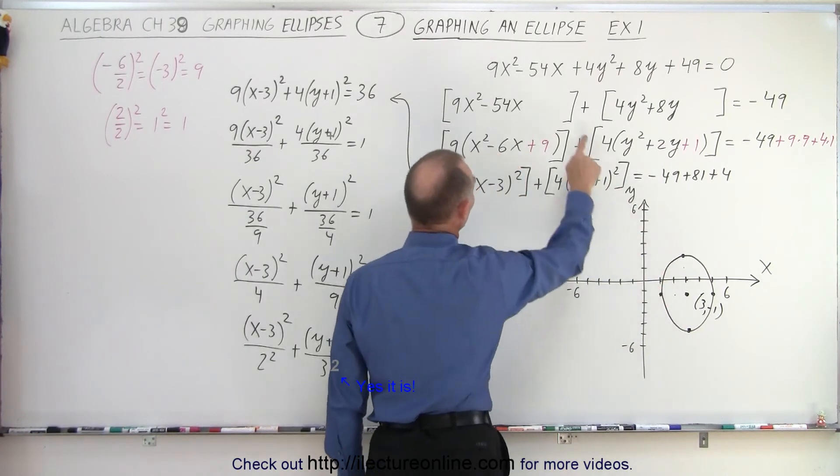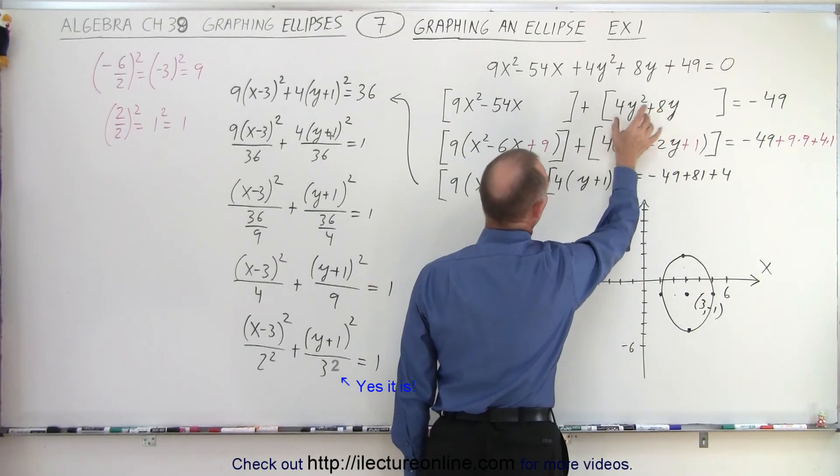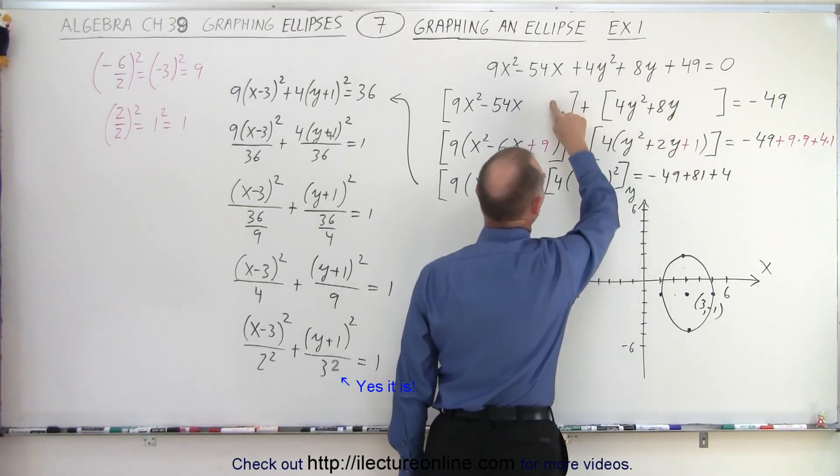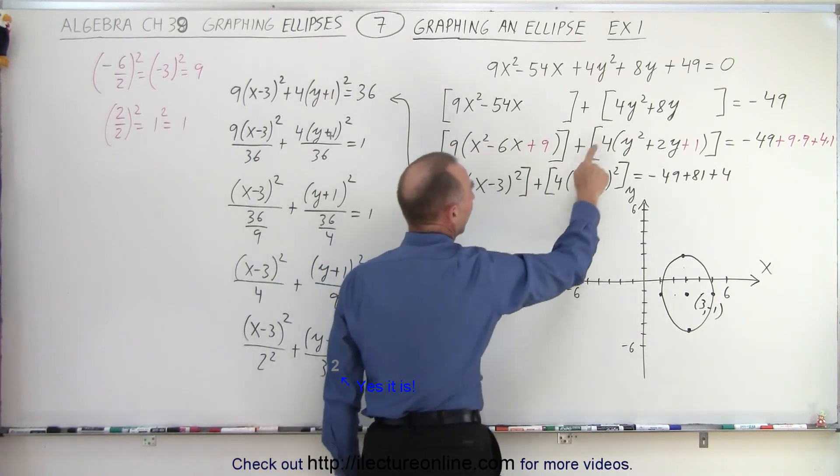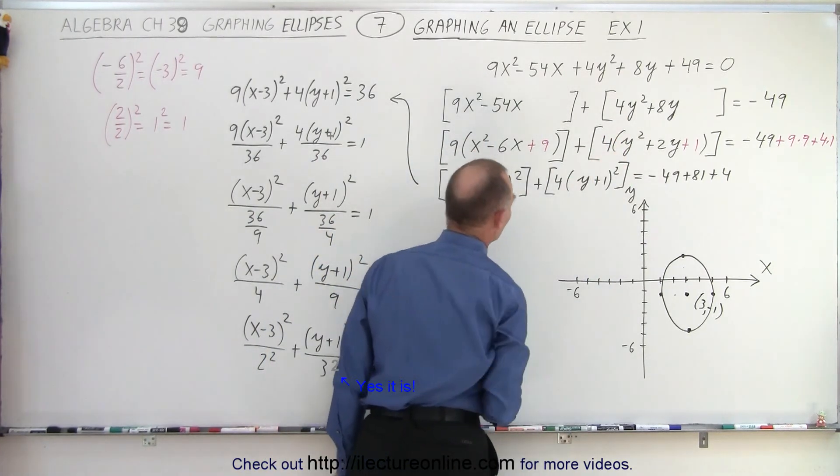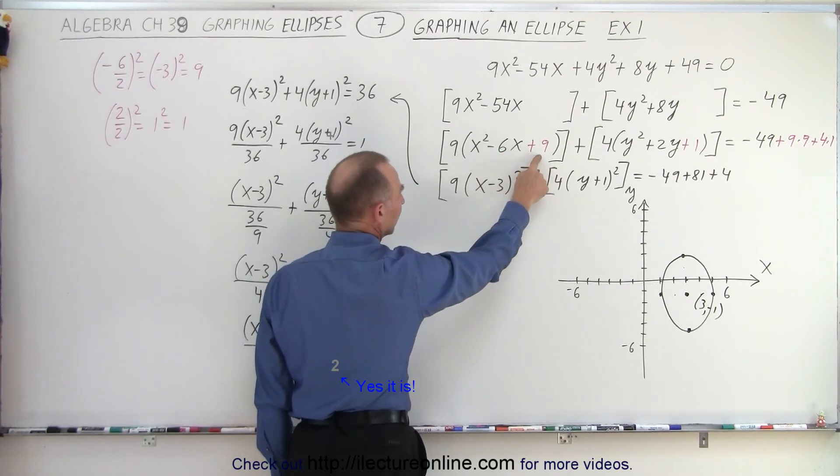Notice when we have it in this form, there's no way you can go from here directly to the graph. You first have to recognize that you have two terms with an x in it and two terms with a y in it. And then you need to complete the square. Before you do it, you need to factor out the coefficient in front of the x squared and factor out the coefficient in front of the y squared.